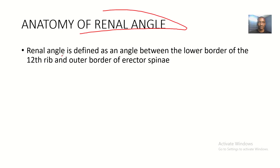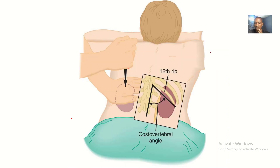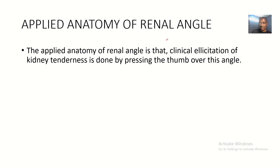The renal angle is defined as the angle between the lower border of the twelfth rib and the outer border of the erector spinae. Looking at this skeletal view, this is the lower border of the twelfth rib, and if there were muscles here, this area represents the outer border of the erector spinae muscle. That's the anatomy of the renal angle.